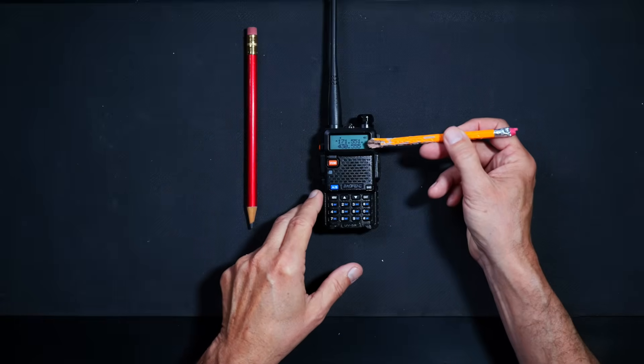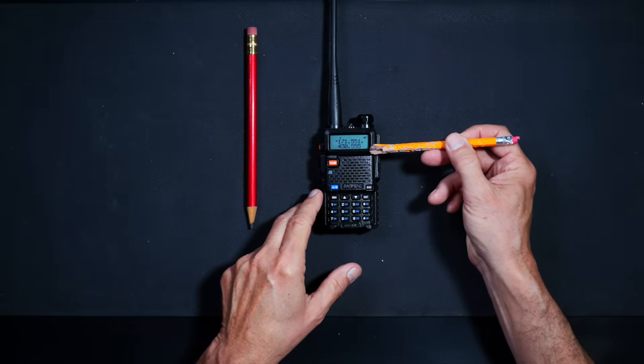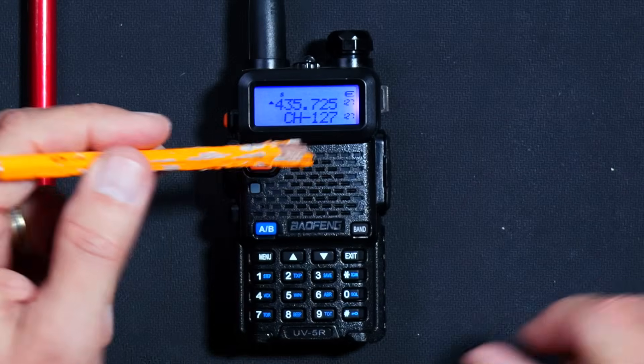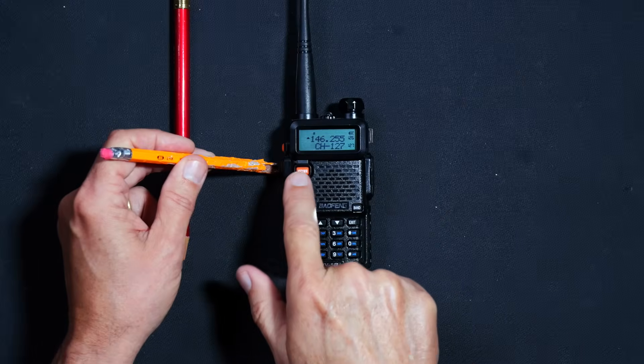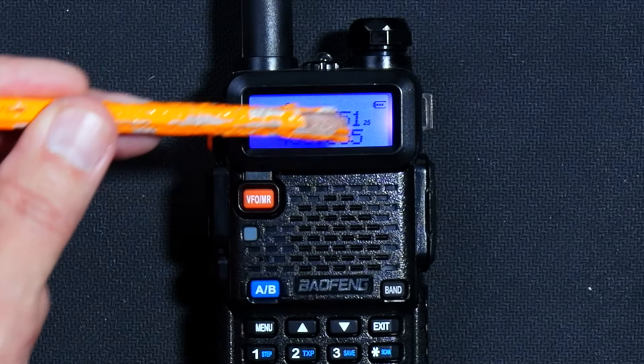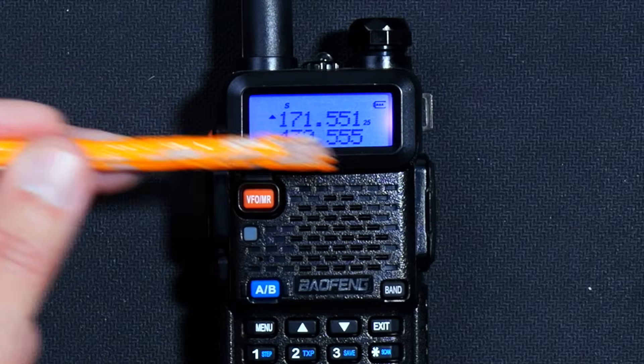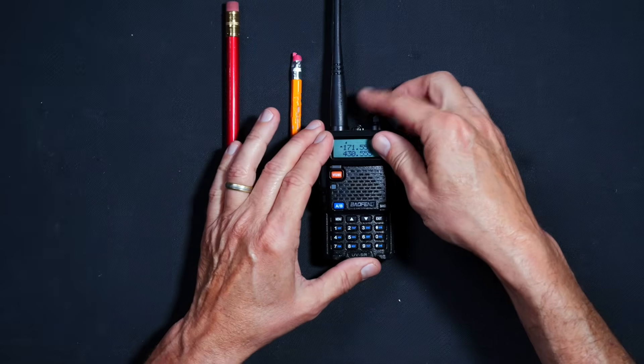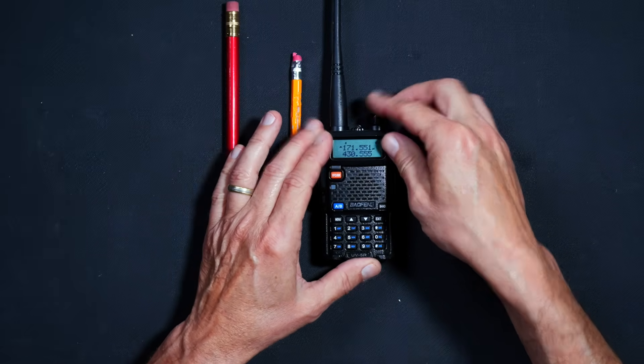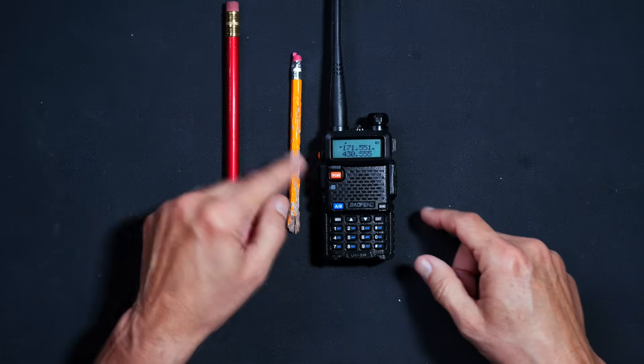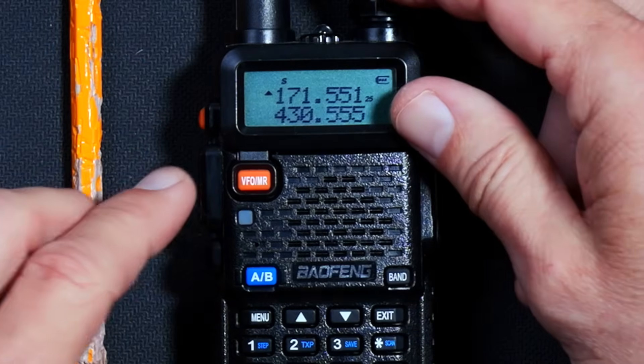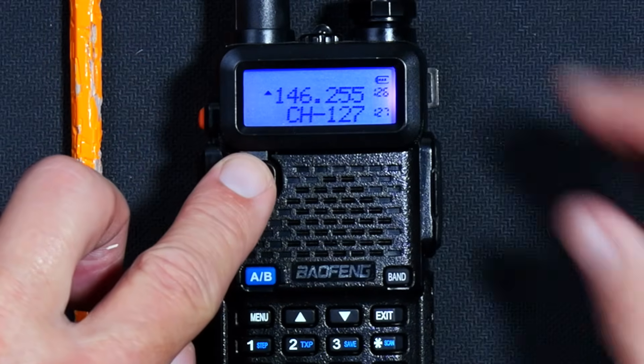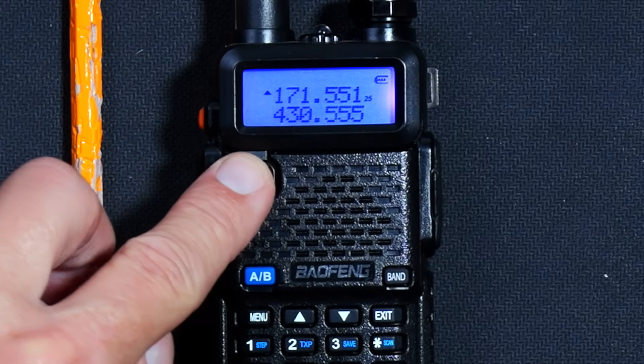You can tell which mode you're in by looking at the screen. In channel or memory mode, you will see small channel numbers on the right. However, in VFO mode, you will see no channels on the right. Or if you have the voice option enabled, she will tell you what mode you're in each time you press the VFO MR button.